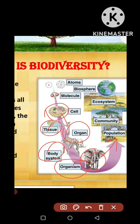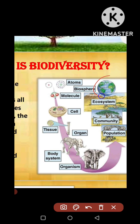Different types of organisms form populations together. Different populations form communities, and different communities form the ecosystem. Ultimately, all the ecosystems together form the earth's ecosystem.